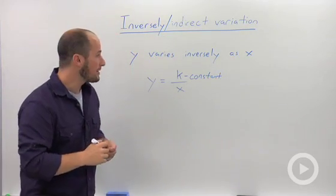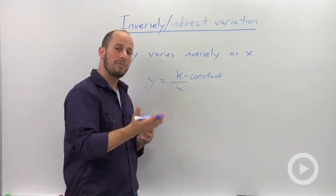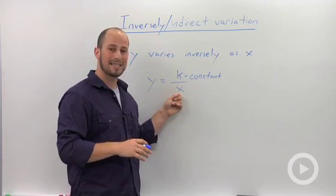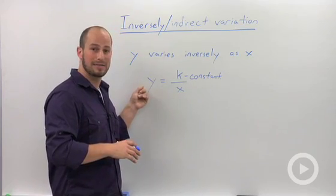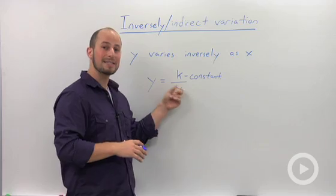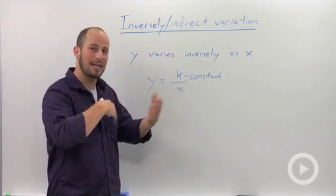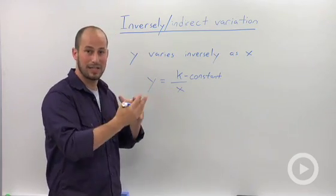Why this is called inversely is what happens is the bigger x gets the smaller y gets, and the smaller x gets the bigger y gets. So there's an indirect inverse variation, they're opposite.